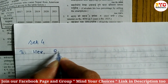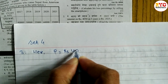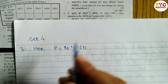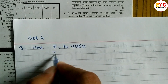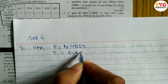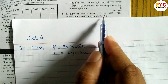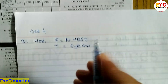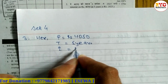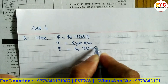Here, P is equal to Rs. 4,050. Time is 5 years. Interest is equal to Rs. 2025.